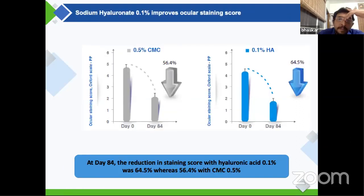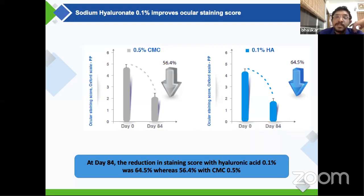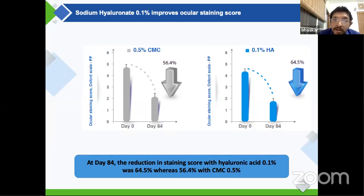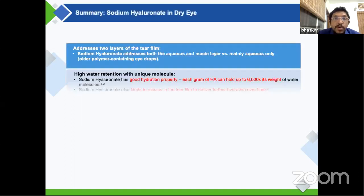Looking at objective parameters beyond breakup time, staining of the ocular surface was compared. Both groups started with a similar amount of staining. In the 0.5% CMC group there was about a 56% decrease in staining, while in the 0.1% HA group there was about a 64% decrease. Both medicines reduce staining by addressing the dry eye causing epithelial issues, but improvement in surface epithelial irregularity is much higher with sodium hyaluronate. At day 84, the reduction was significantly greater in the sodium hyaluronate group.